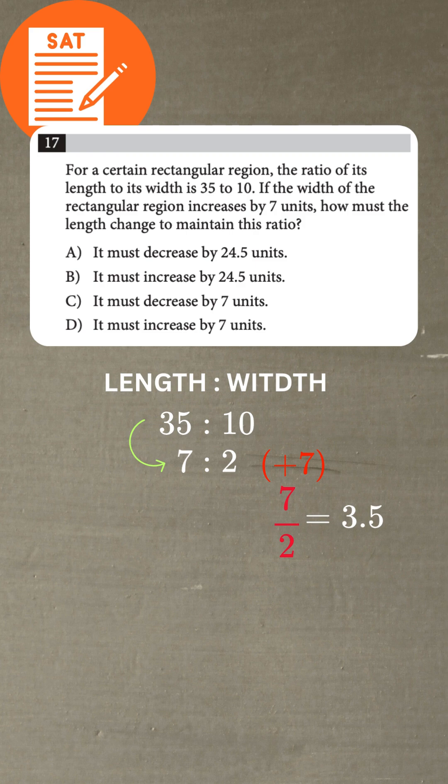Since our width grew by 3.5 times its base unit, our length must do the same. Take that original ratio of 7, and multiply it by 3.5. 7 times 3.5 equals 24.5.